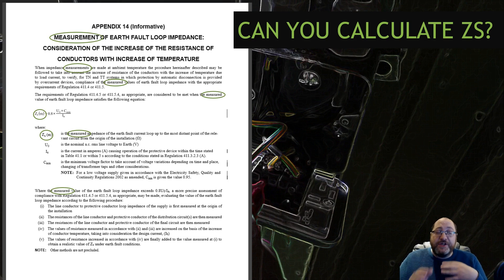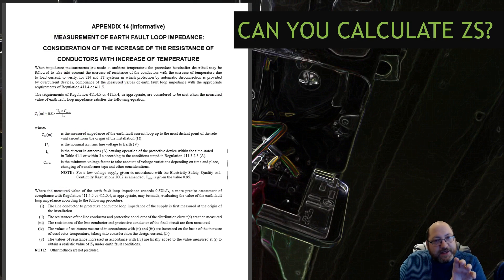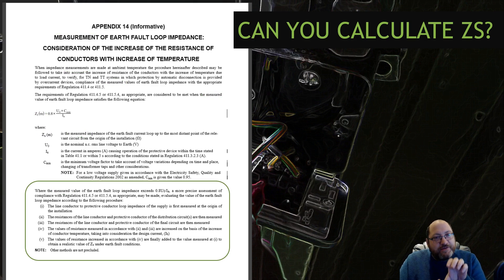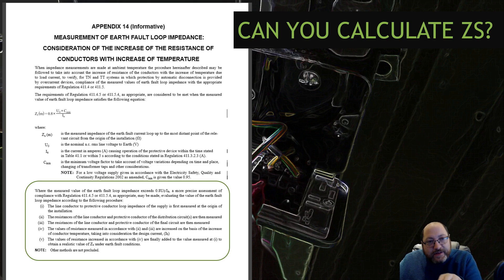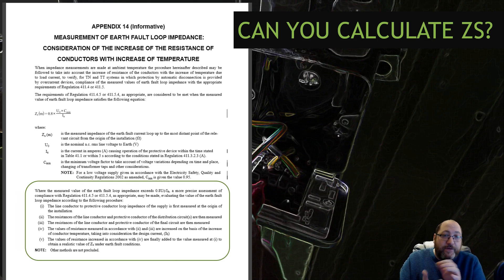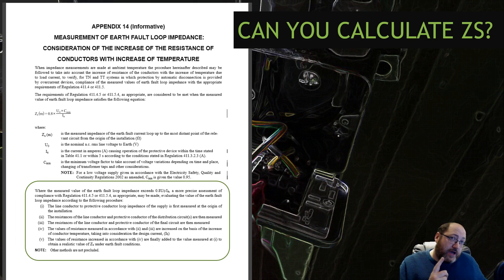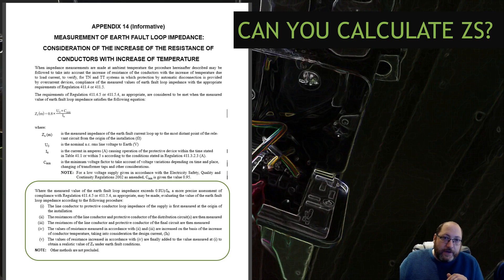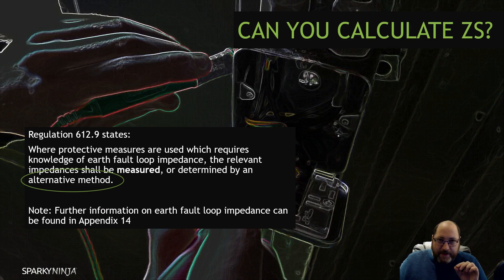That is the standard route — the standard route is to measure. There's no question of calculation as the first approach here. However, further down it does say: if your measured value of the loop impedance doesn't exceed the 0.8 × U/IA calculated value, you can then assess the line conductor and protective conductor loop impedance. So it says you can calculate, but that's calculating to verify a measurement you are not satisfied with.